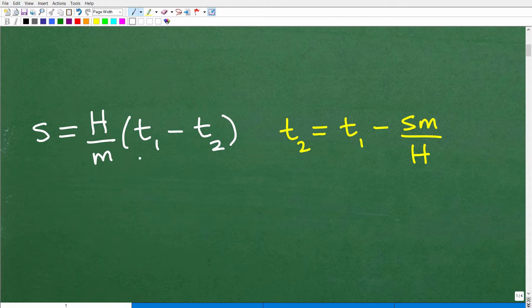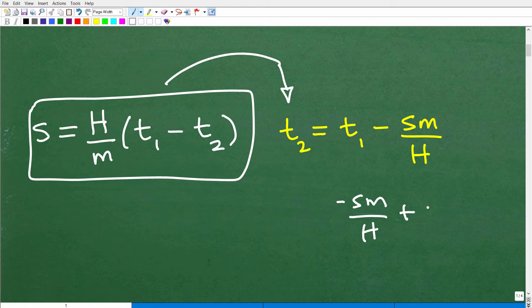Okay, right now we have this equation S is equal to H over M times T1 minus T2. So when we solve for T2, this particular formula, when I rewrite it in terms of T2, you should get this: T2 is equal to T1 minus SM over H. Now, you could have negative SM over H plus T1. That would be just shuffling these things around. Or instead of SM, you could have MS like that. Same thing, but some sort of variation of that.